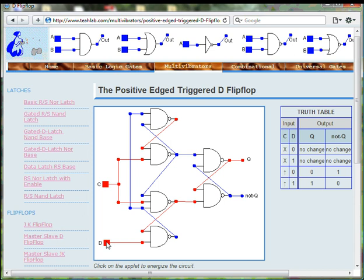What this means is that no change will happen to the output Q unless the clock signal is changing from zero to one. From one to zero, nothing happens to the output Q.